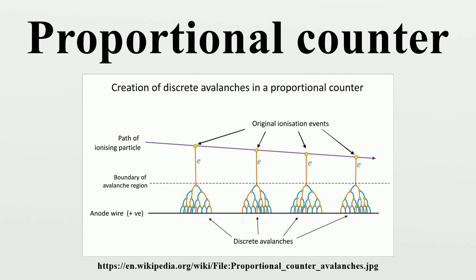The charge amplification greatly improves the signal-to-noise ratio of the detector and reduces the subsequent electronic amplification required. In summary, the proportional counter is an ingenious combination of two ionization mechanisms in one chamber which finds wide practical use. Regarding spectroscopy applications, the proportionality between the energy of the charged particle traveling through the chamber and the total charge created makes proportional counters useful for charged particle spectroscopy. By measuring the total charge between the electrodes, we can determine the particle's kinetic energy.